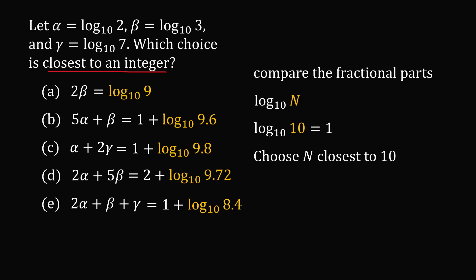And that will be the choice that's closest to an integer. In this case, we have 9, 9.6, 9.8, 9.72, and 8.4. And clearly, 9.8 is closest to 10. Therefore, answer choice C will be the closest to an integer. And that's the answer.